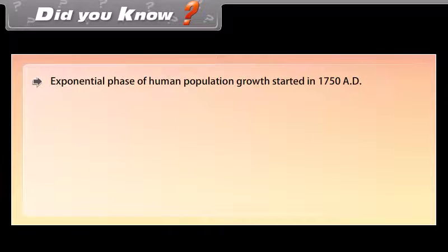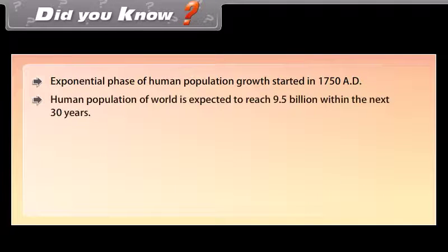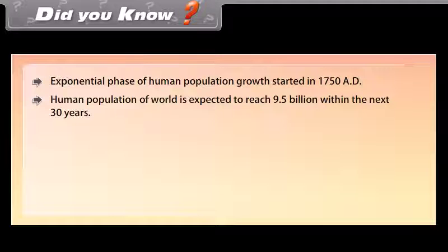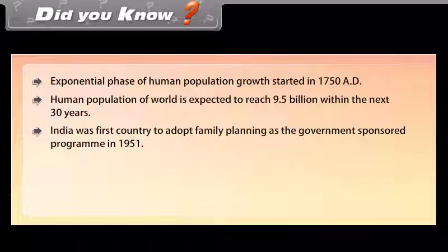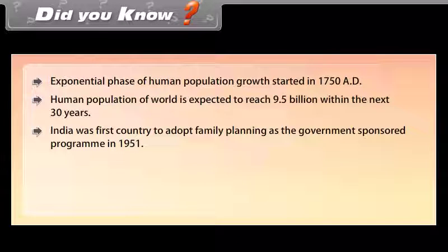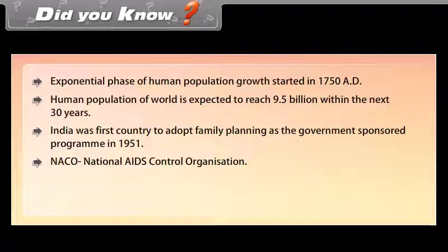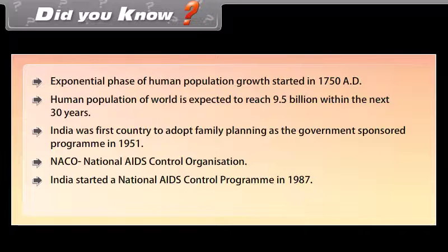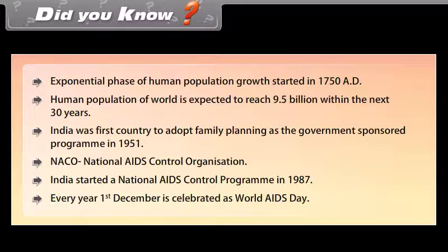Did you know? The exponential phase of human population growth started in 1750 AD. The human population of the world is expected to reach 9.5 billion within the next 30 years. India was the first country to adopt family planning as a government-sponsored program in 1951. NACO — the National AIDS Control Organization — started a national AIDS control program in India in 1987. Every year, the 1st of December is celebrated as World AIDS Day.